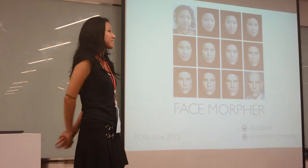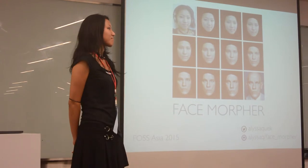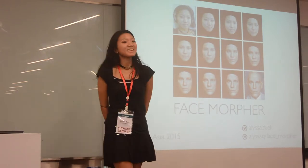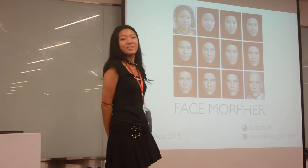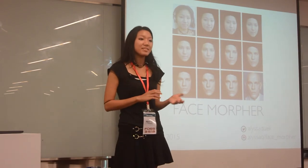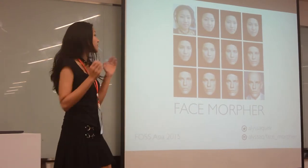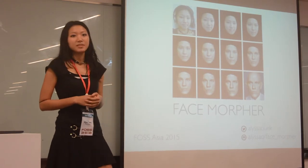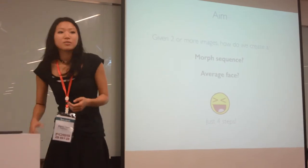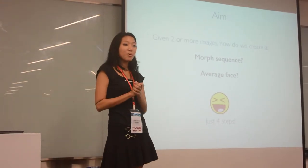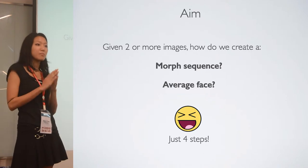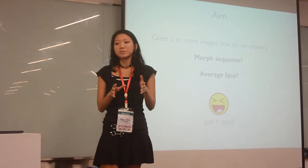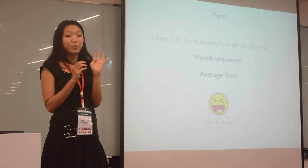Good morning everyone. My name is Alyssa, I'm a Python JavaScript freelance developer here in Singapore. Today I'm going to talk about face morphing. All the code was written in Python 2.7, it's on my GitHub at sq/face-morpher if you want to check it out. My aim for today is to answer two questions: given two images, how can we create a morphing sequence from one image to another? And how can we create an average face for all those images? I'm going to answer that in just four simple steps.